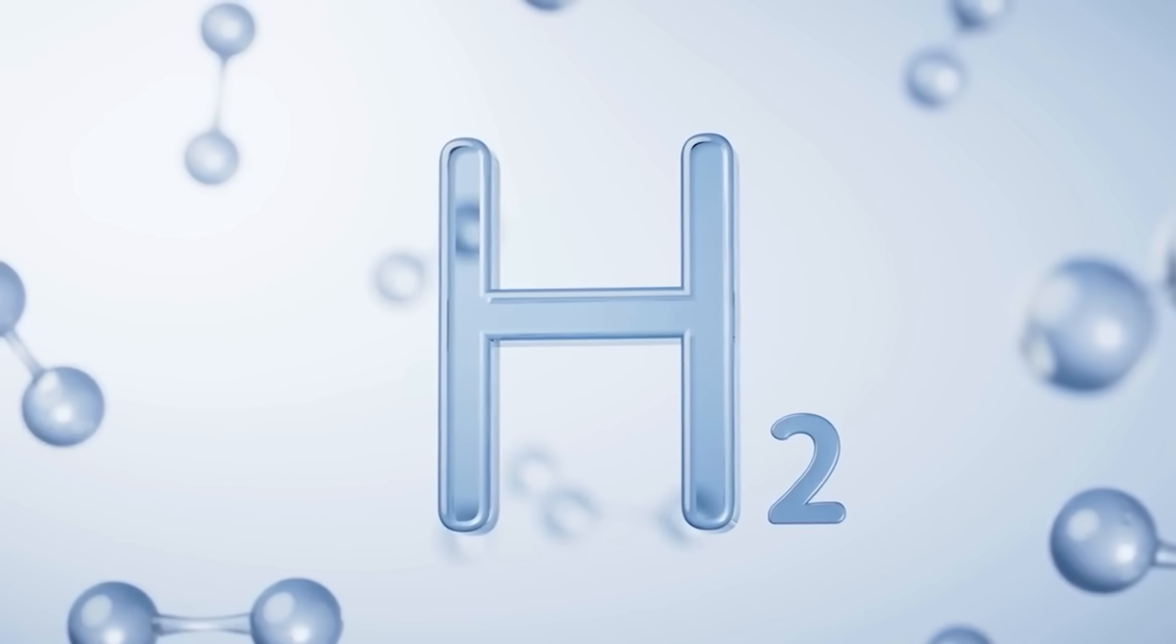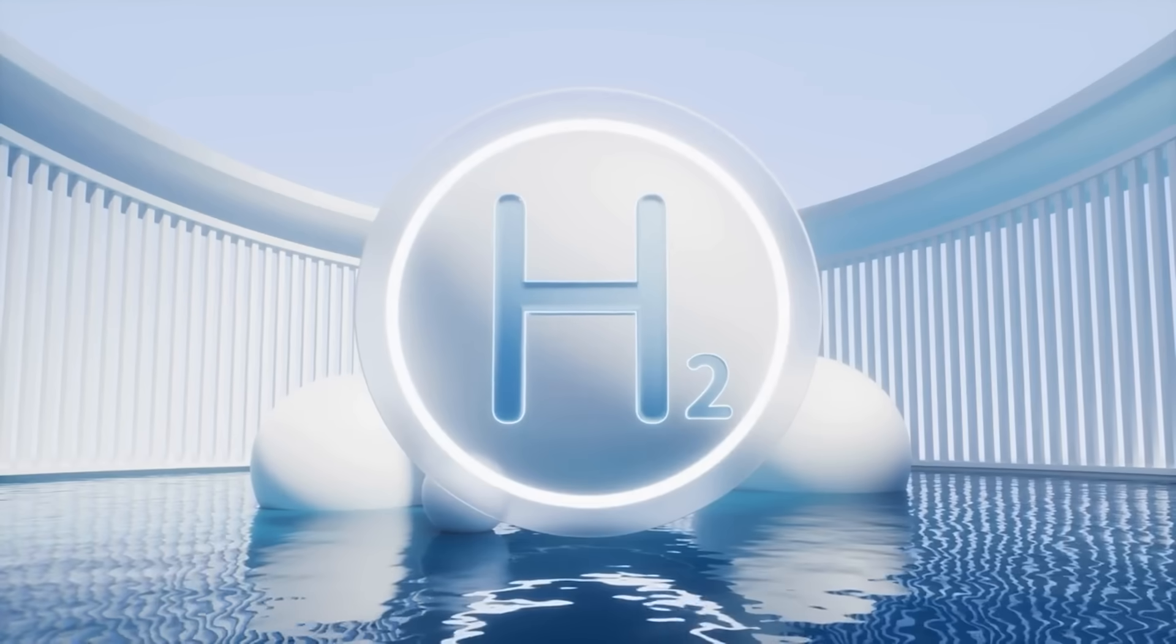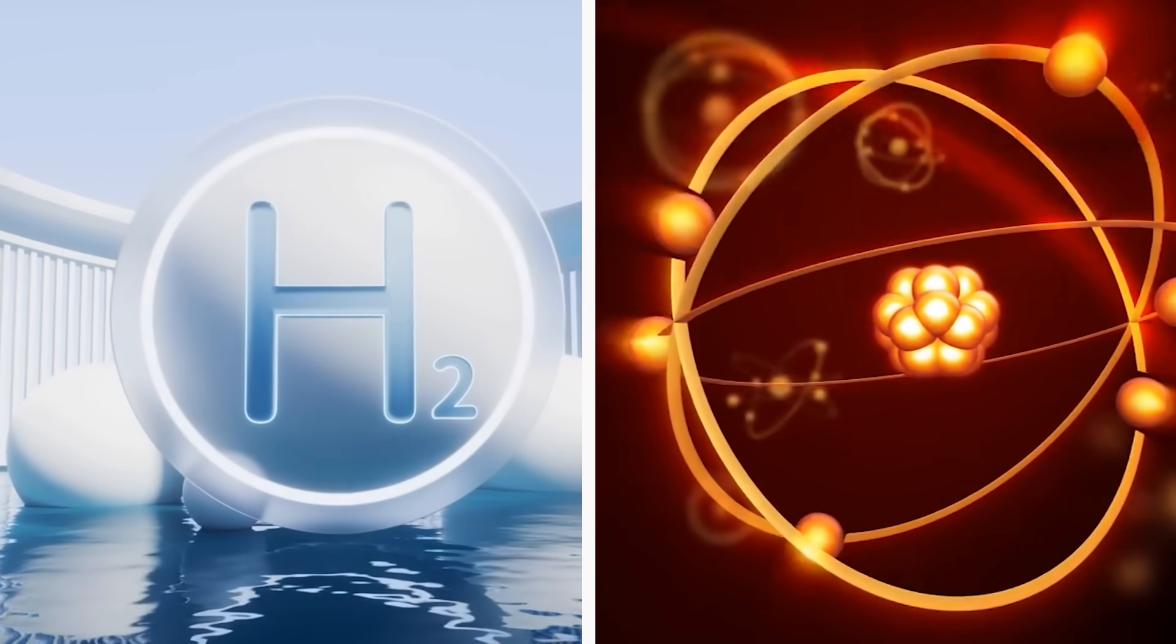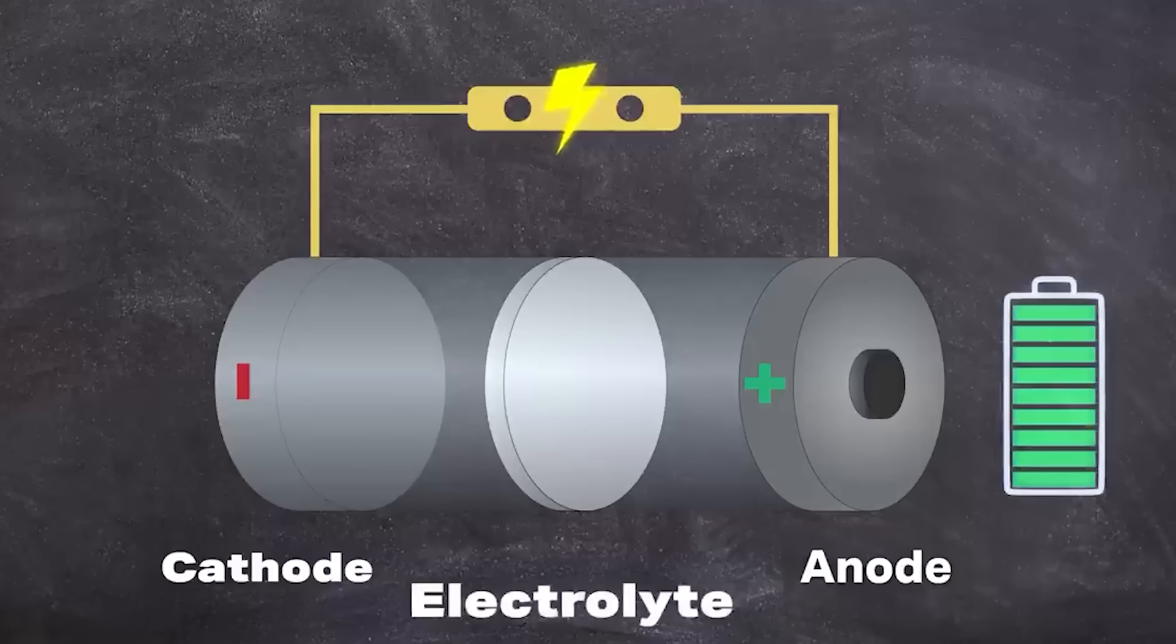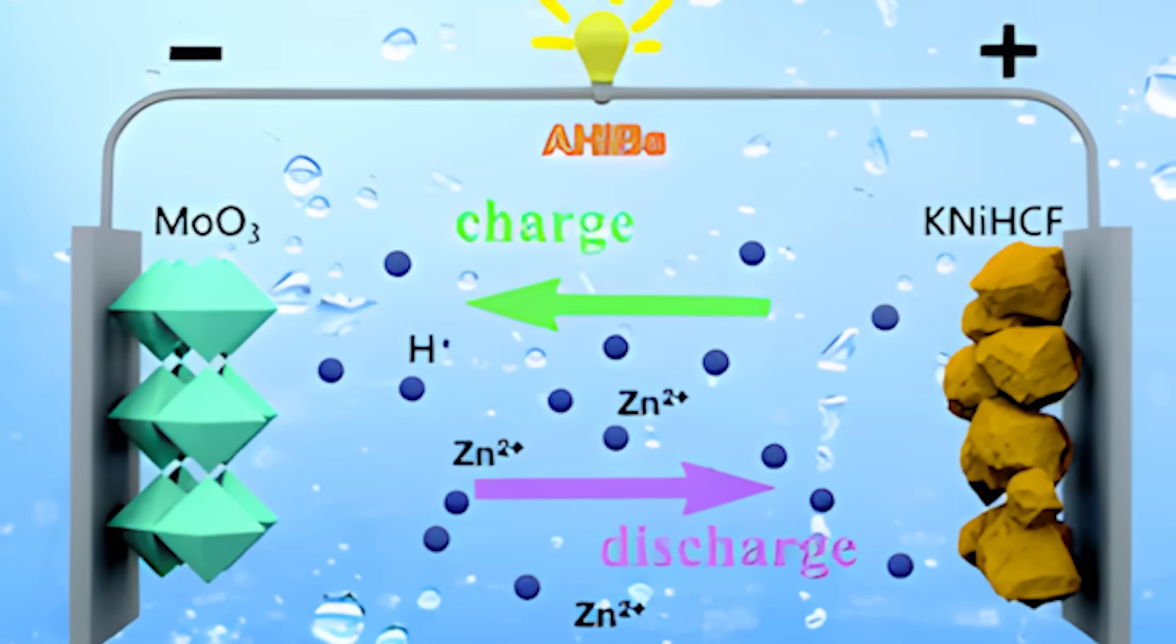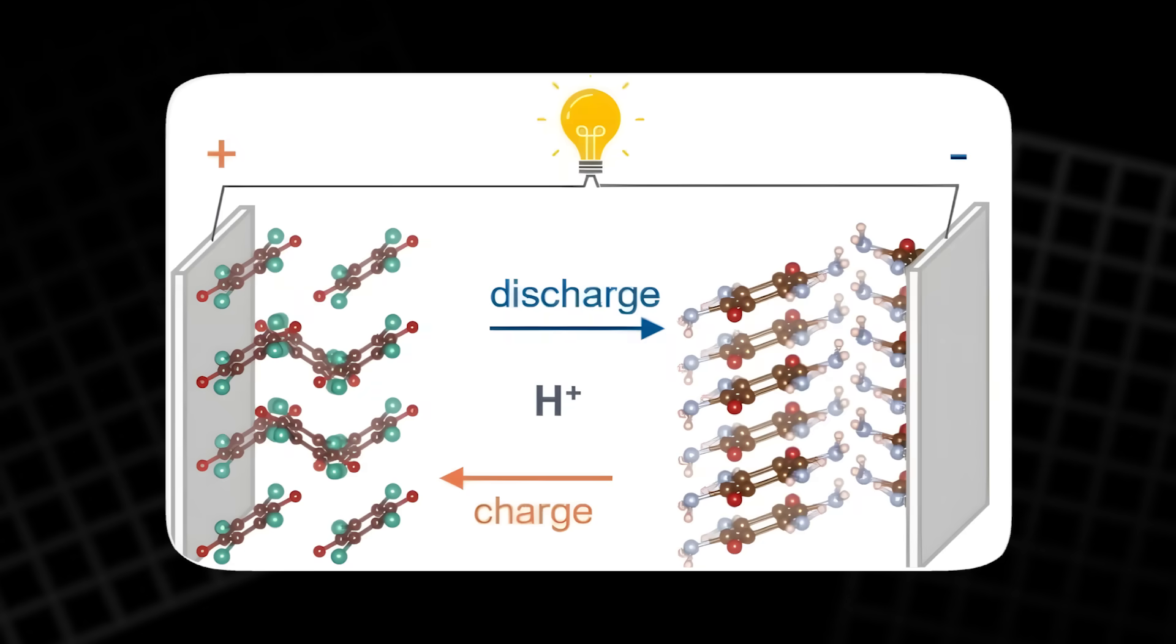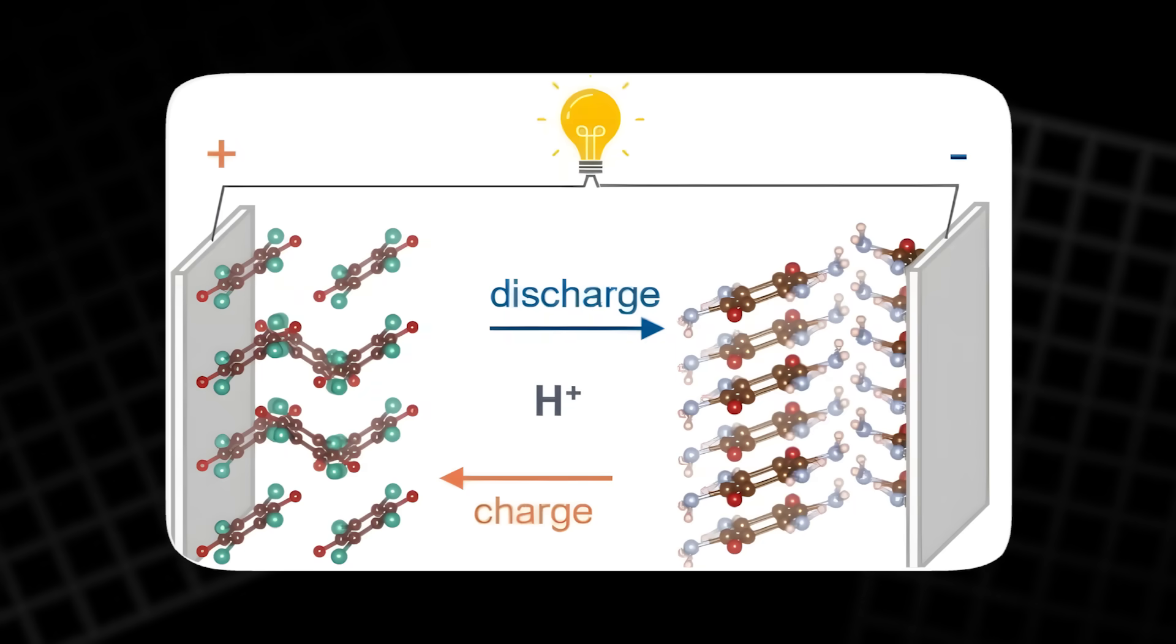Hydrogen atoms are the smallest in the universe, made up of one proton and one electron. When hydrogen loses its electron, the remaining proton becomes a positively charged particle that can move extremely fast through materials. As the battery discharges, protons move through a water-based electrolyte while electrons travel through an external circuit, generating electricity.